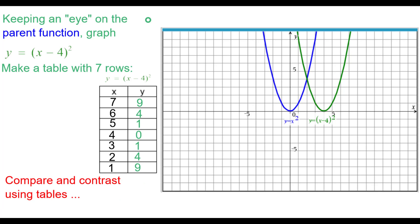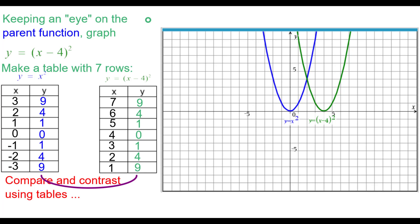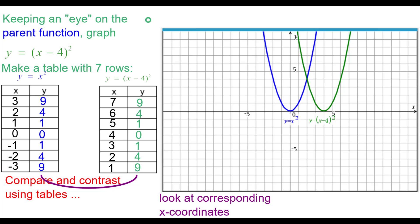Let's compare and contrast using tables. We'll make a table for y equals x squared, the traditional parabola. Go ahead and compare and contrast what you see in the two tables. One thing you'll notice is that the y coordinates are identical. Now look at the corresponding x coordinates and see what pattern is emerging.